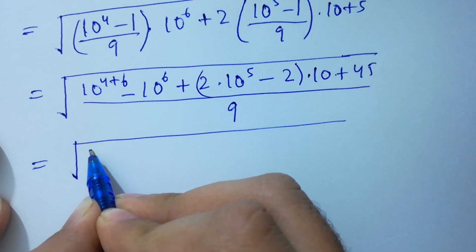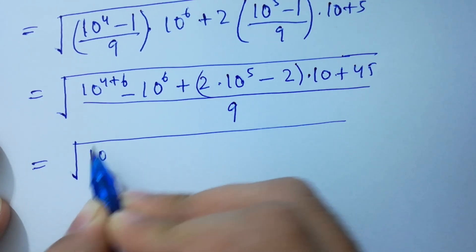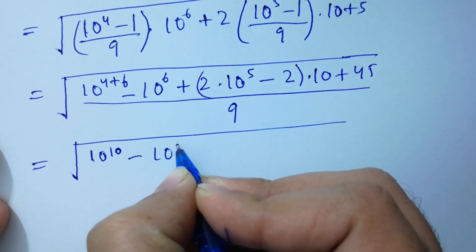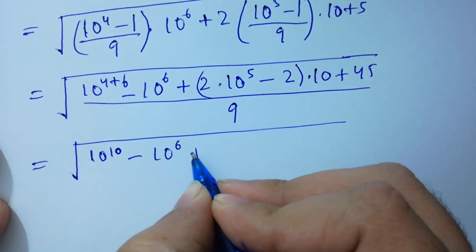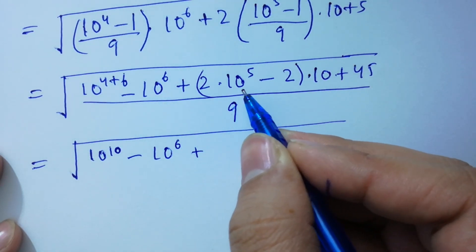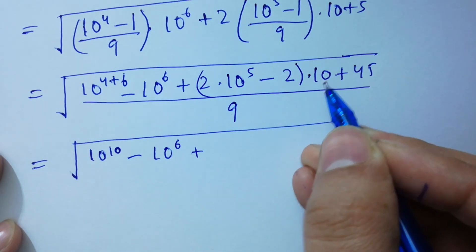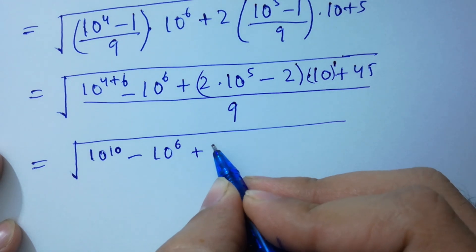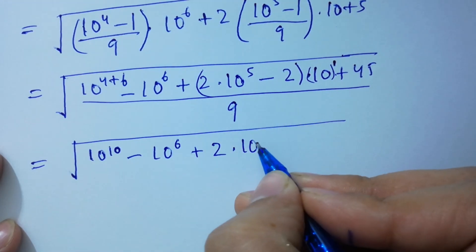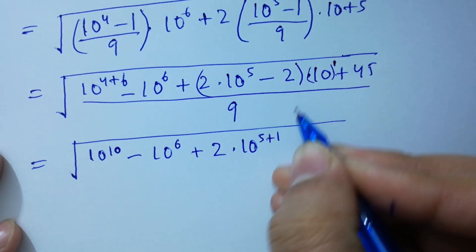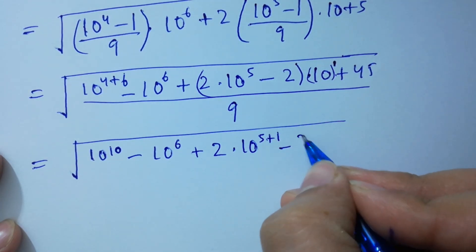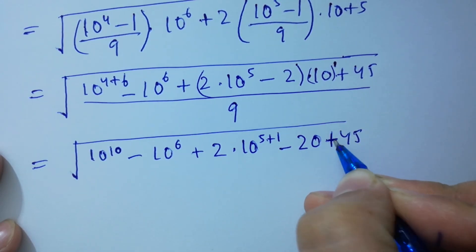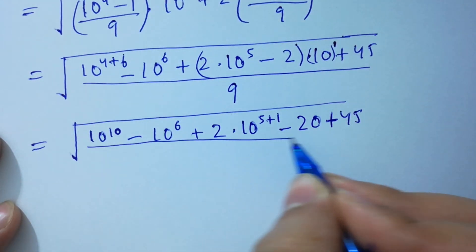Next, ten to the power 6 plus 4 is 10, minus ten to the power 6, plus here 2 times ten to the power 5, and here we have power 1, will be here 2 times ten to the power 5 plus 1, minus 2 times ten will be here 20, plus 45, over 9. Next.